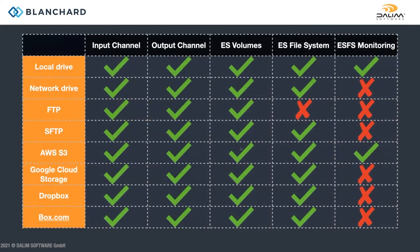Here's a summary of where they stand with different file systems and what can be done with them. You have local drive, network drive — network drive has no monitoring. The Windows JDF device for file system monitoring is working again according to Dalim. FTP can't be used as a file system and has no monitoring. SFTP has no monitoring but can be used for everything else. AWS S3 can be used completely. Google Cloud Storage, Dropbox, and Box all have no monitoring. They are adding storage options — if you want Azure or anything else, feel free to reach out to us and Dalim.